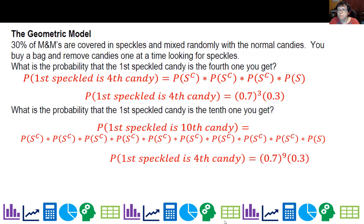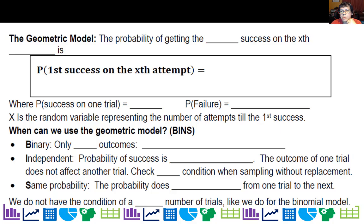This brings us to the geometric model: the probability of getting the first success on the x-th attempt is (1-p)^(x-1) times p. The first ones up till the very last are failures, 1 minus p, and then you finally have success on the last attempt.